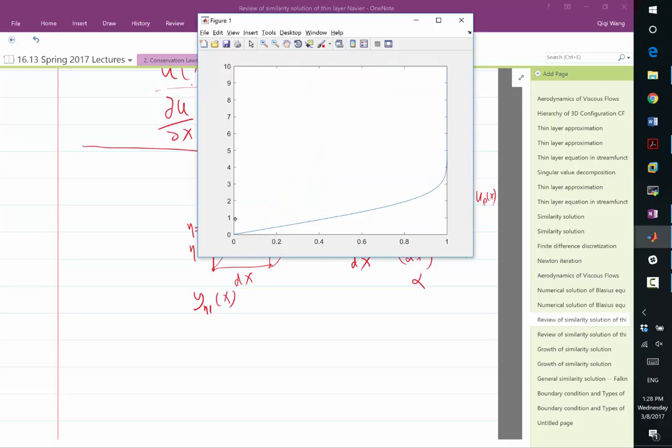So if you look up, eta equal to 1 corresponds to about 0.4 times the free stream velocity, then y eta 1 is basically how much further from the wall you have to go in order for the velocity of the process profile to equal to 40% of the free stream.